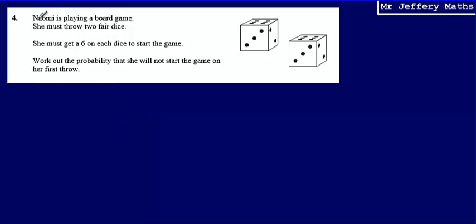This is question four. Here we're told that Naomi is playing a board game. She must throw two fair dice. She must get a six on each dice to start the game. We're asked to work out the probability that she will not start the game on her first throw.